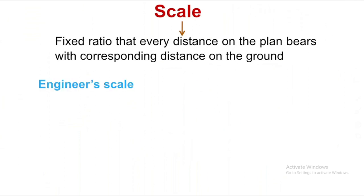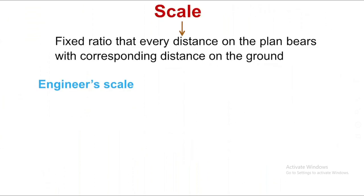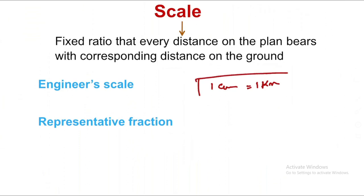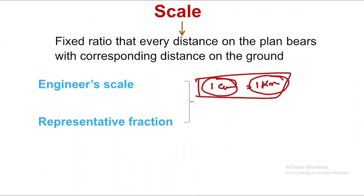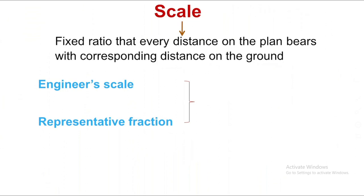The engineer's scale is stated as: 1 cm is equal to 1 km. This means on the plan it is 1 cm and the corresponding ground distance is 1 km. This is the engineer's scale representation.